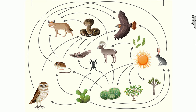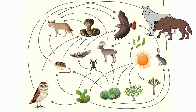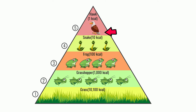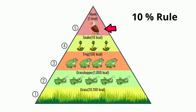If wolves moved into the food web they would be apex predators. Each time you move from one trophic level to the next, only roughly 10% of the energy is transferred to the next level. This is often referred to as the 10% rule. This explains why as you move up trophic levels there are fewer individuals at each level.